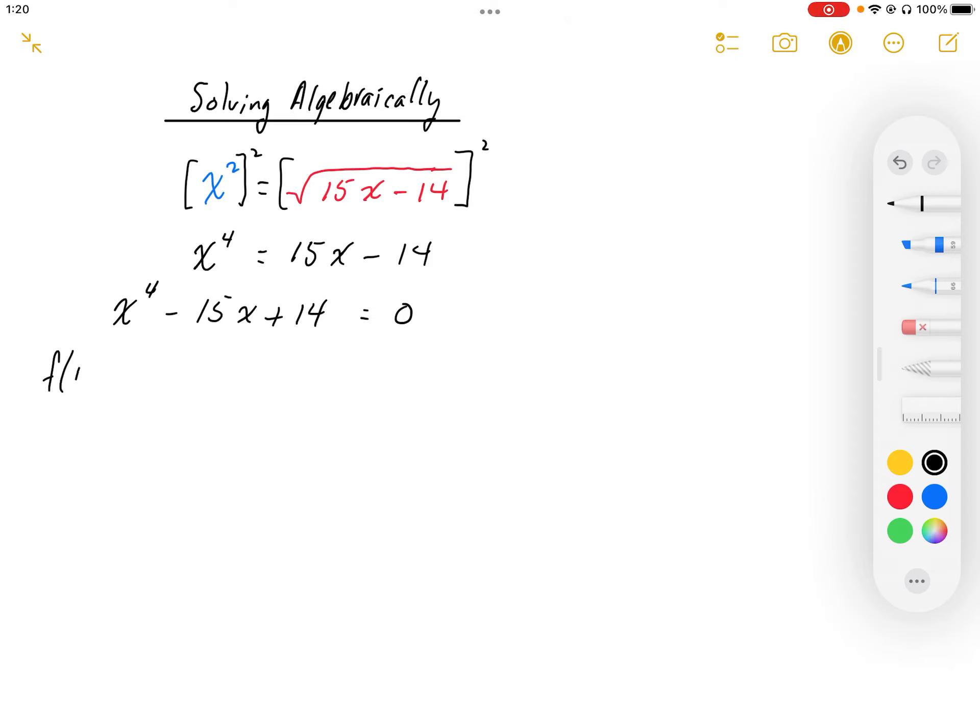So using the remainder theorem I'm going to guess f of 1. When I plug 1 in, I get 1 minus 15 plus 14, and that's equal to 0. So that tells me that one of the factors is going to be x minus 1.